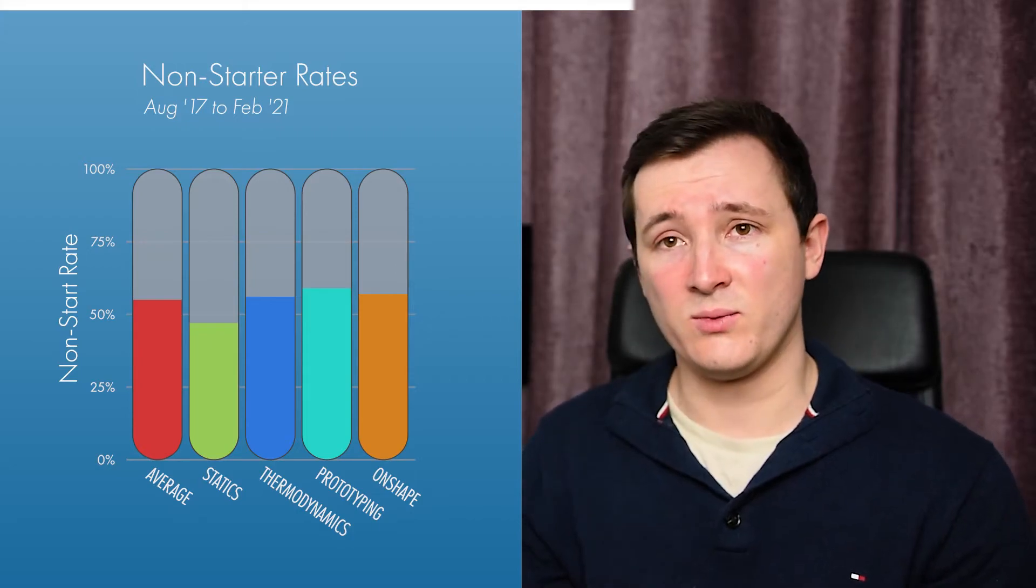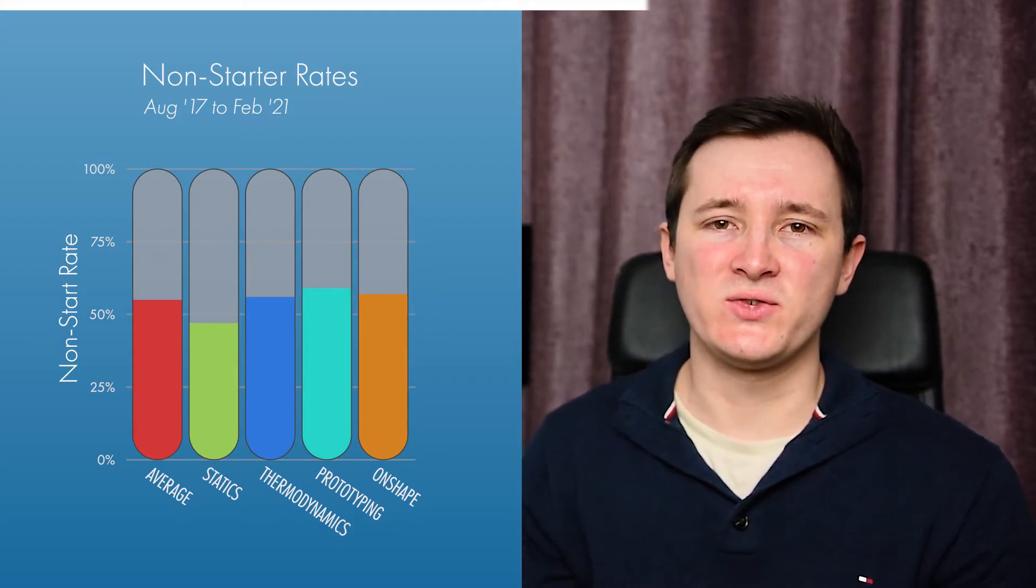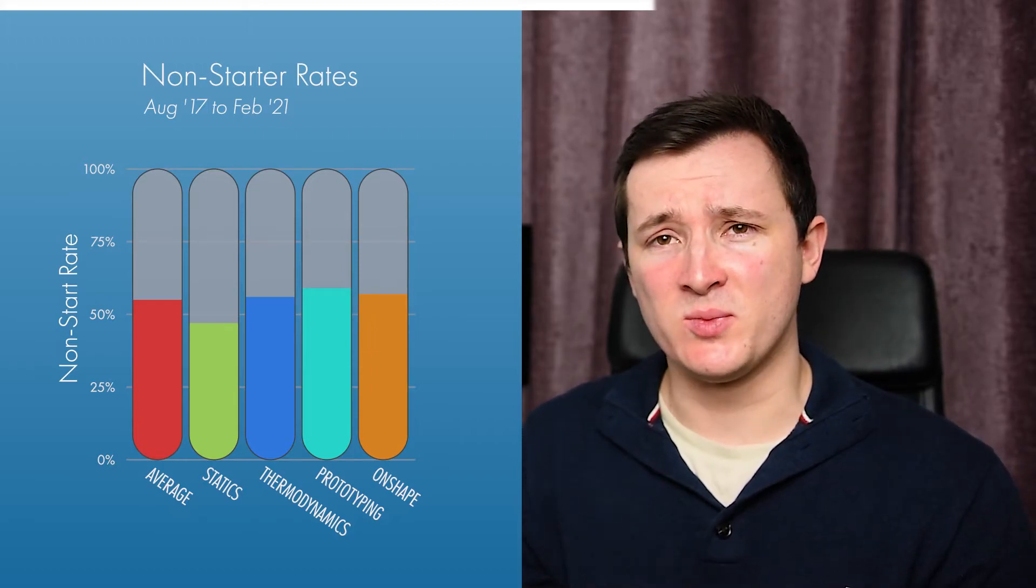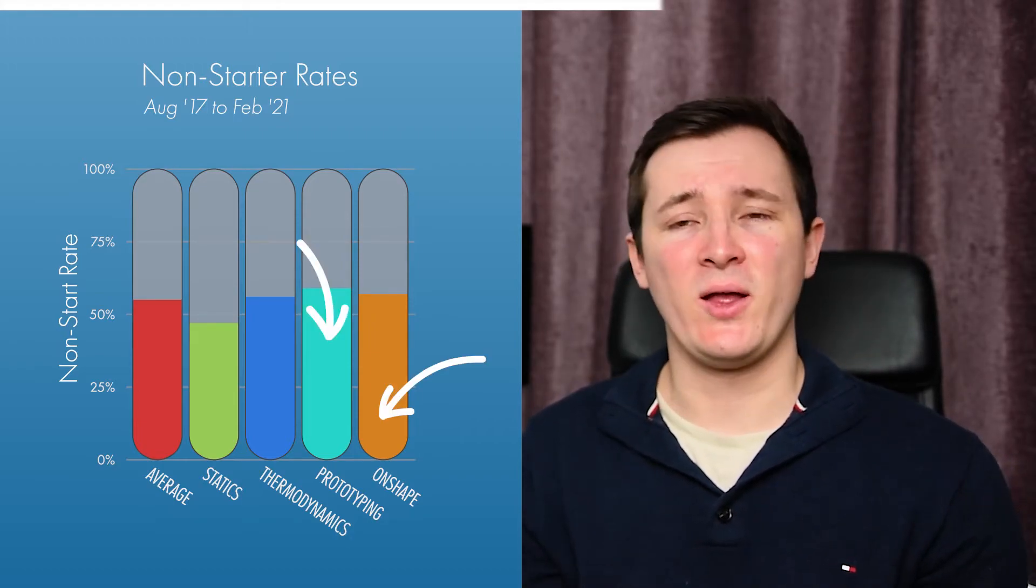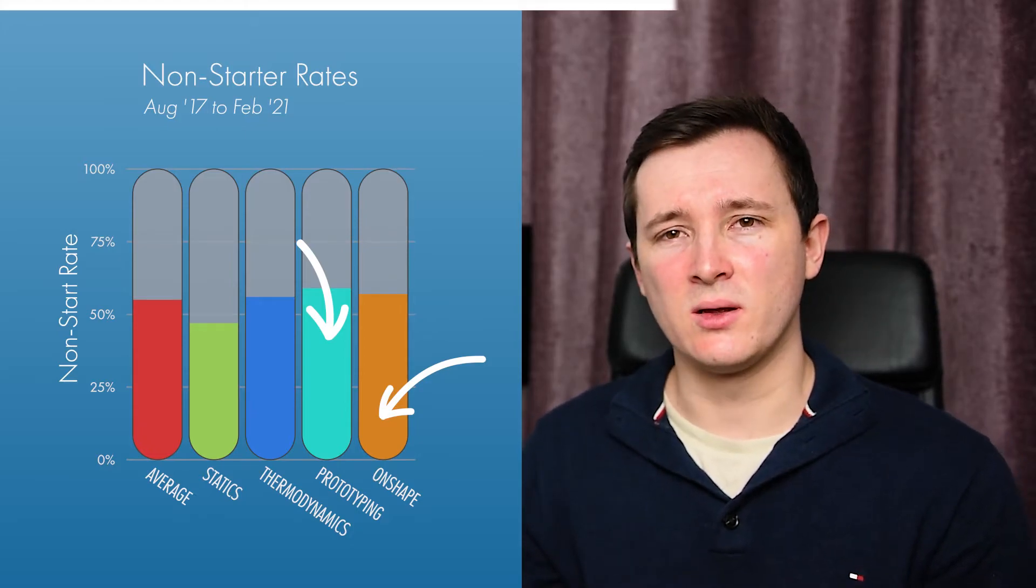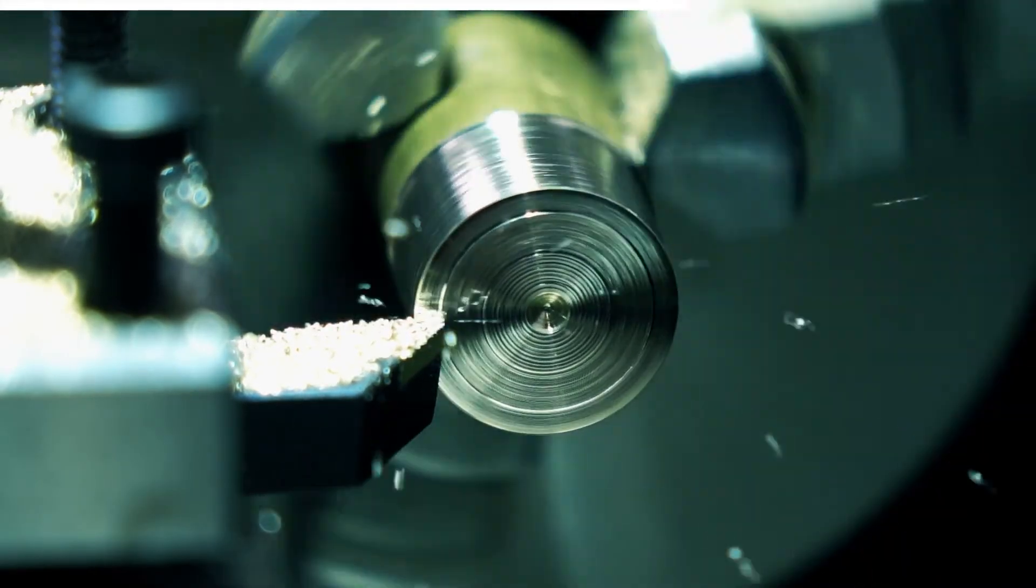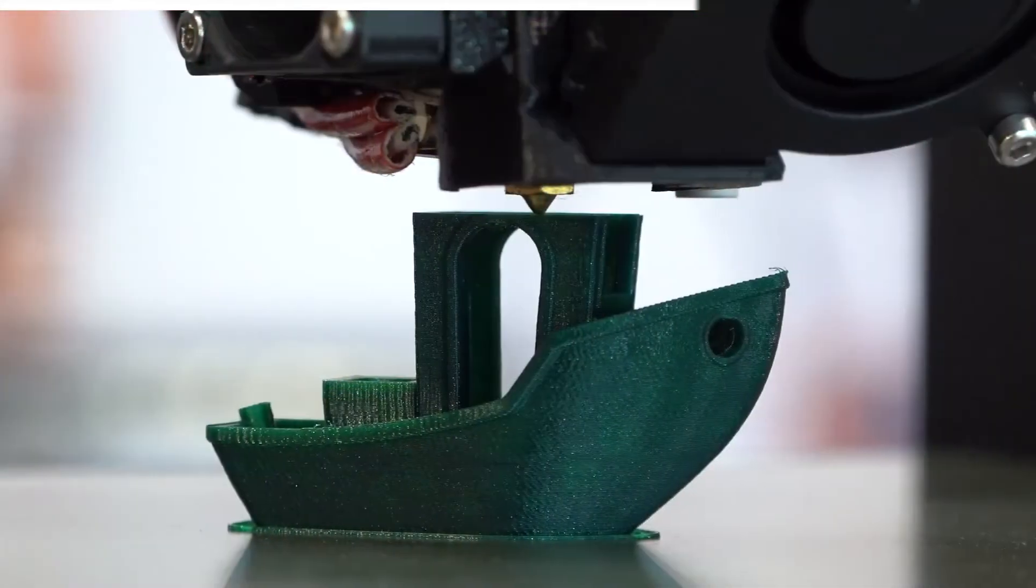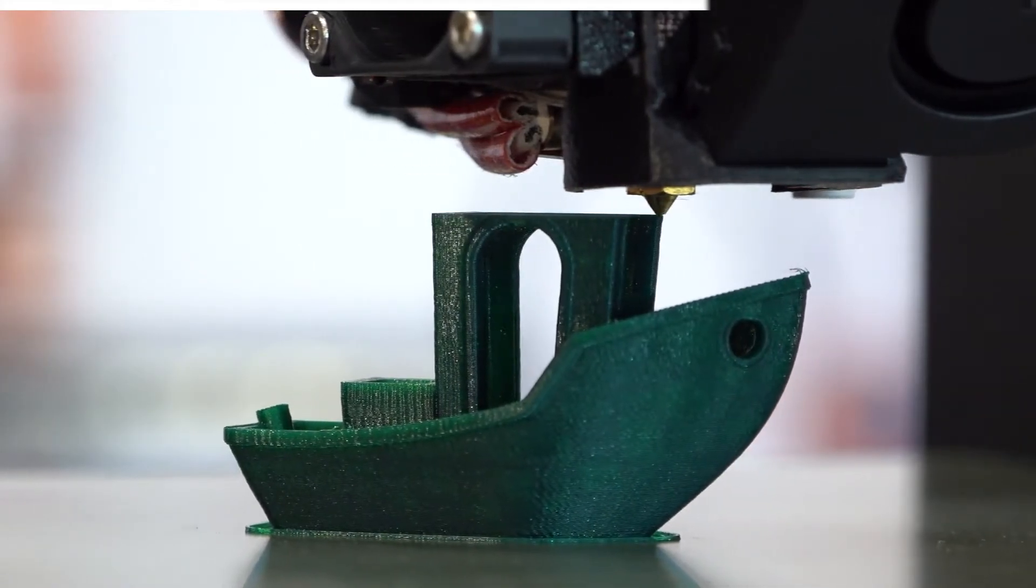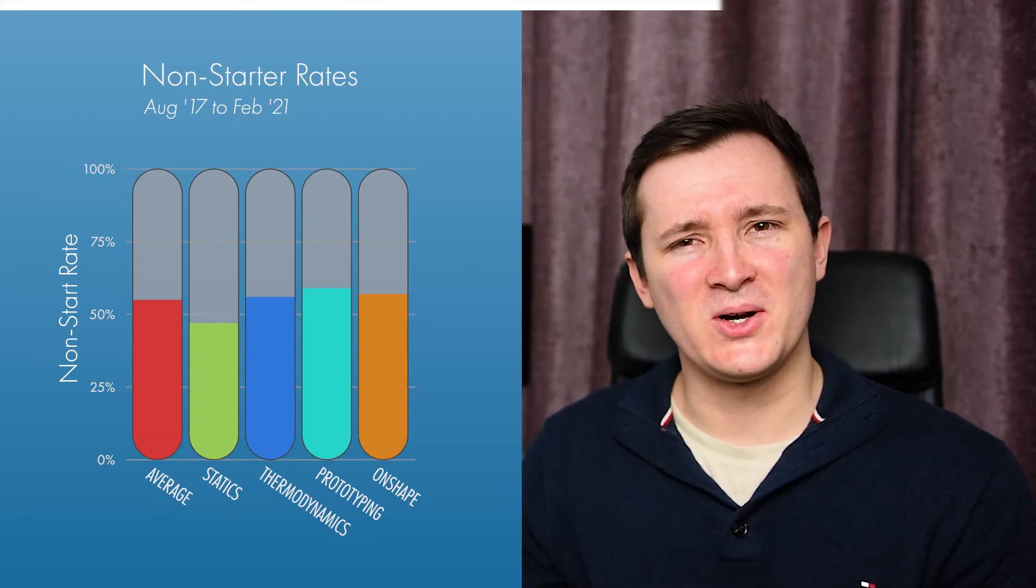So 56, 59 and 57 percent. They are kind of a step change above statics. What really surprises me is that the prototyping and the Onshape courses I think are a little bit more visually interesting than the statics course. They've got stock footage and nice images and I think a much nicer editing style. The audio is better as well yet there's fewer people even starting them. I find it really strange.